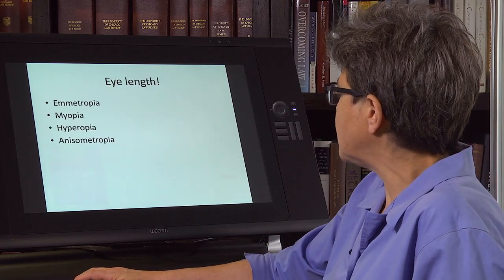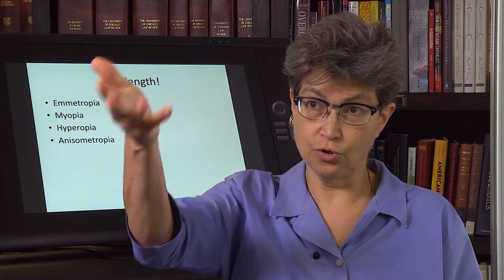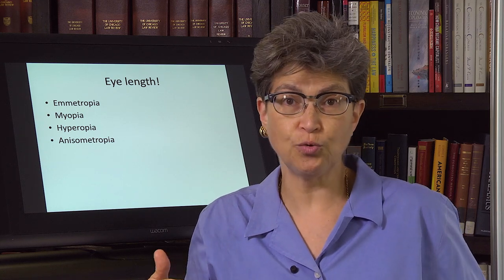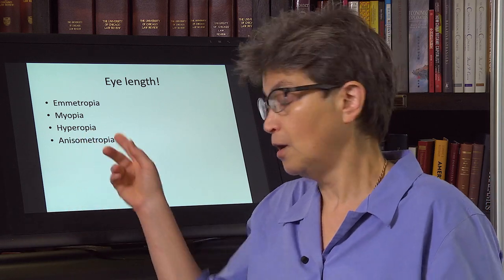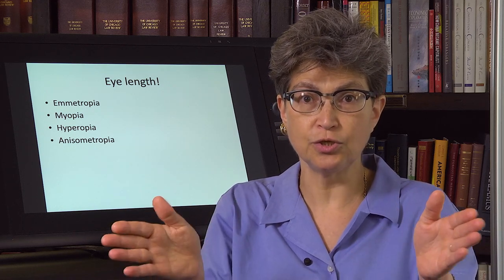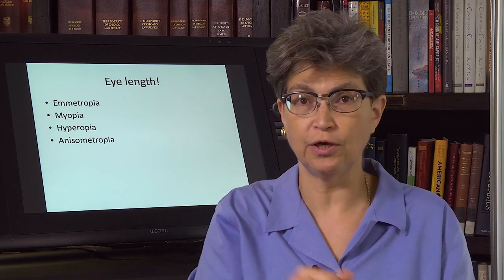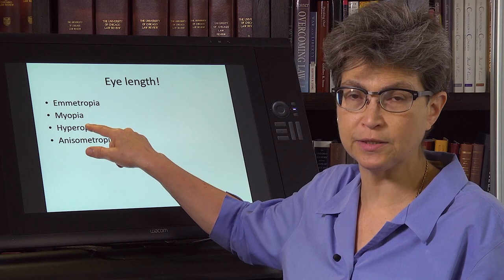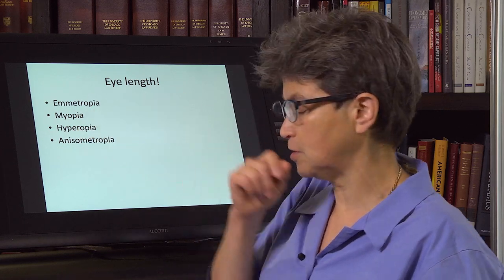The eye can also grow too short — that's hyperopia, meaning you can see far but it's difficult to see near. When looking far, people who are hyperopic will tend to try to increase their refractive power by converging their eyes, so they'll look slightly cross-eyed when looking at a distance. This can be a serious problem. It's much less common than myopia, and its causes are much less understood.